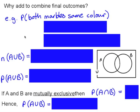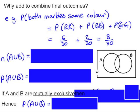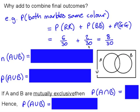The next question is: why do we add to combine final outcomes? In the example with the marbles, we wanted the probability that both marbles are the same colour — the probability of two reds plus the probability of two blues. We could include the probability of two greens, but we know that's zero. So we work it out as six over thirty plus two over thirty, which is eight over thirty.